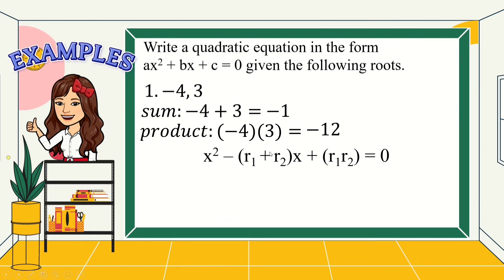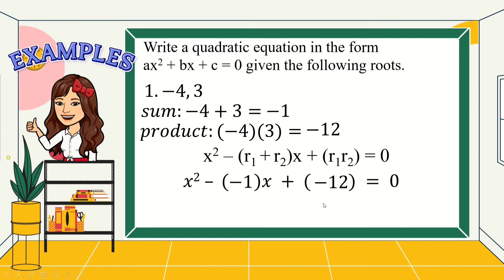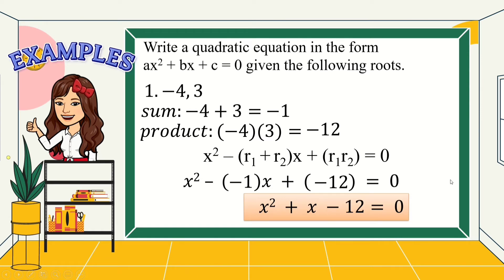Using our equation, x squared minus the sum times x plus the product equals 0. Substituting, the sum is negative 1 and the product is negative 12. Simplifying: negative times negative 1 is positive 1x, and positive times negative 12 is negative 12. So we have x squared plus x minus 12 equals 0. Note: when the numerical coefficient of x is 1, we don't need to write the 1. Negative and negative is positive; positive times negative is negative.